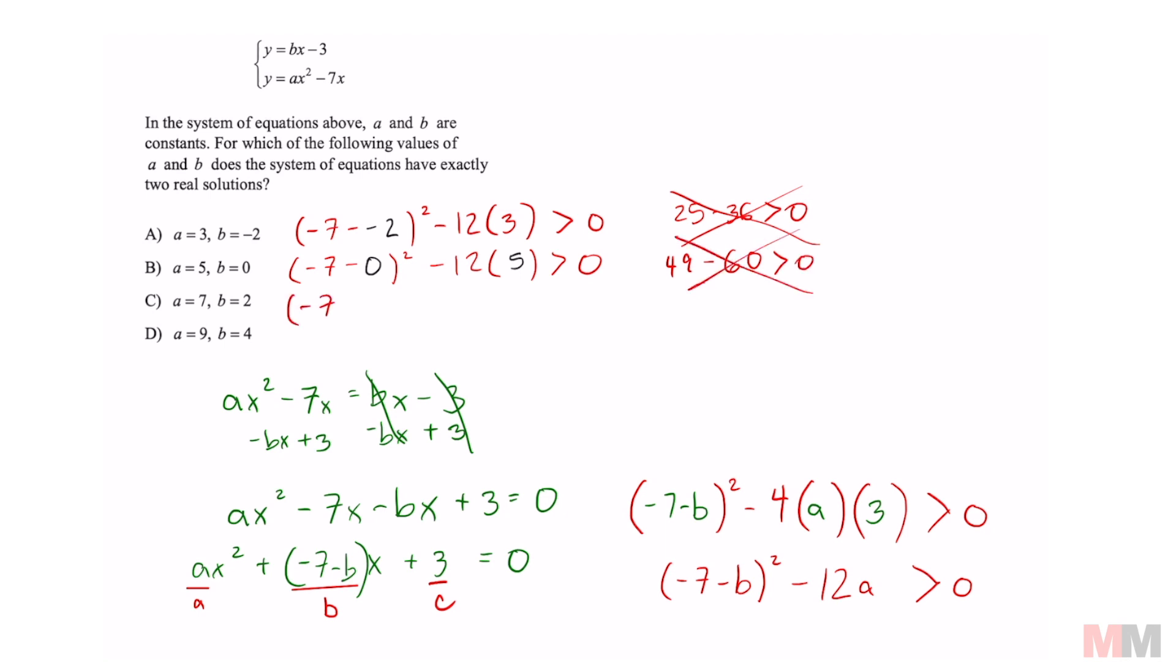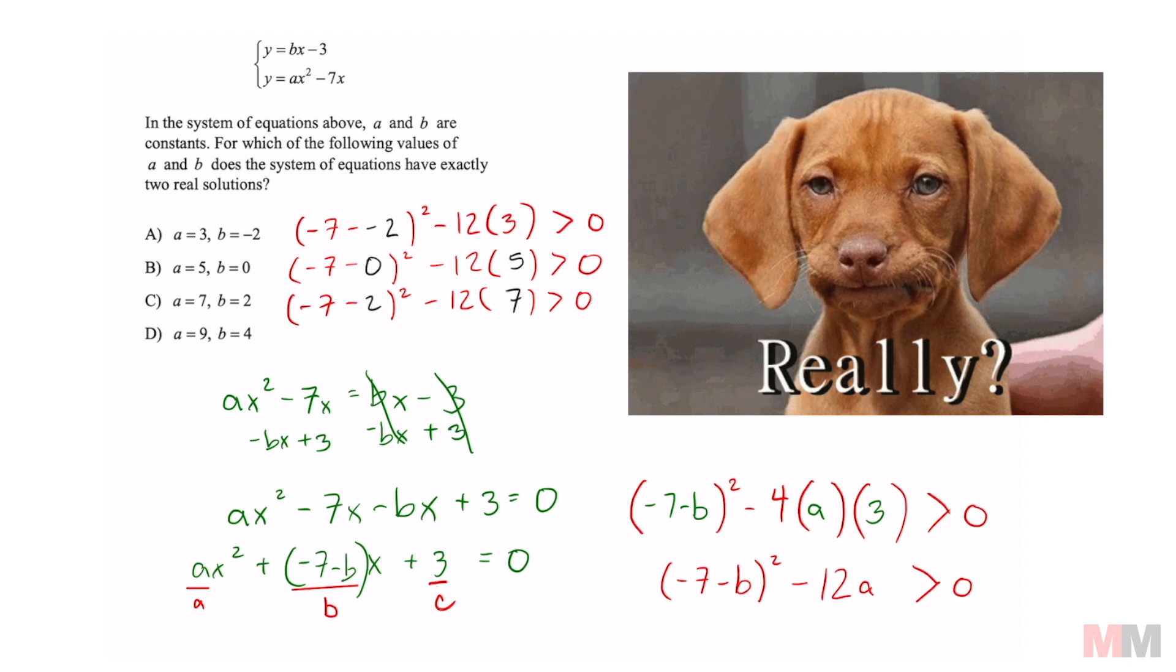Doing that again, negative 7 minus 2 squared minus 12 times 7. Is that going to be greater than 0? 81 minus 84. That's not going to be greater than 0.